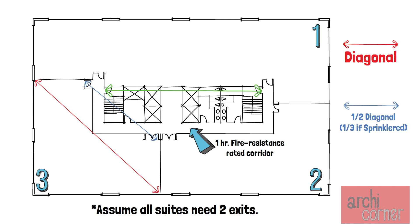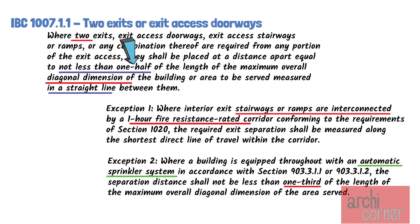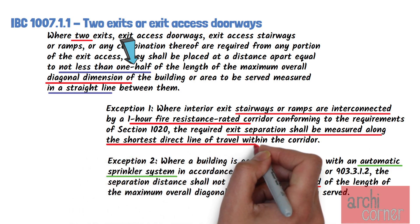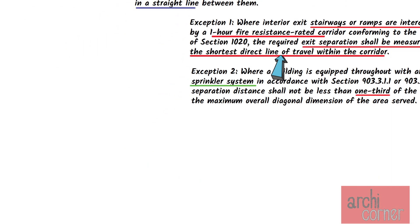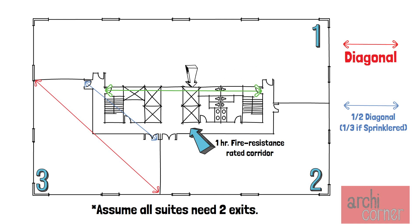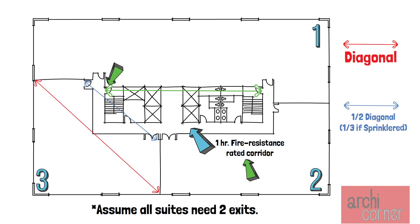The exception allows us to measure exit separation along the shortest direct line of travel within the corridor — not using a straight line, but using the actual path of travel. Originally we just took a straight line and measured the distance between our doors. But since we have a rated corridor, we are allowed to use the actual path of travel instead. This simply gives you a bit more distance to play with.